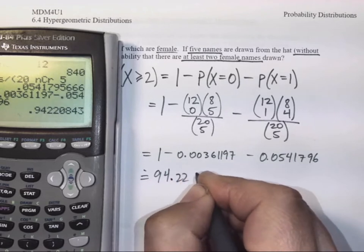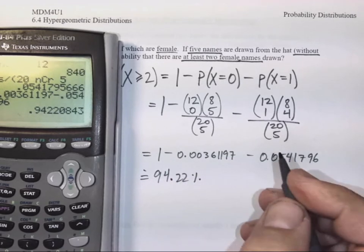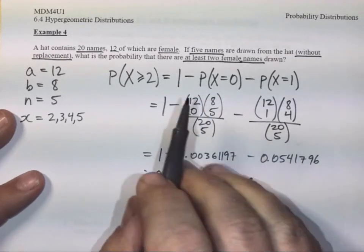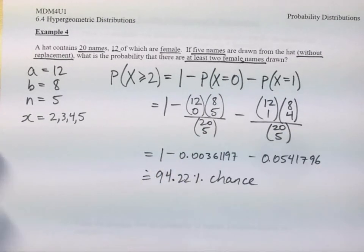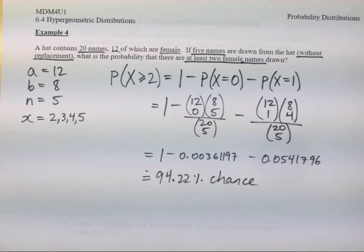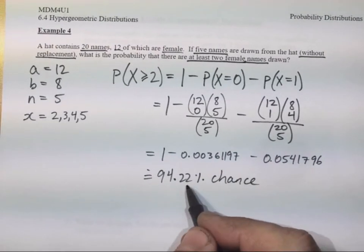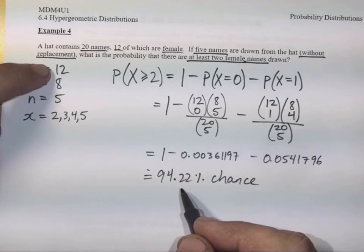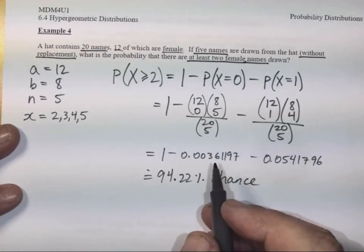Why is it so high, you ask? Because there are more female names than male. 12 to 8 is a big ratio, and so there is a high chance of picking two or more female names.